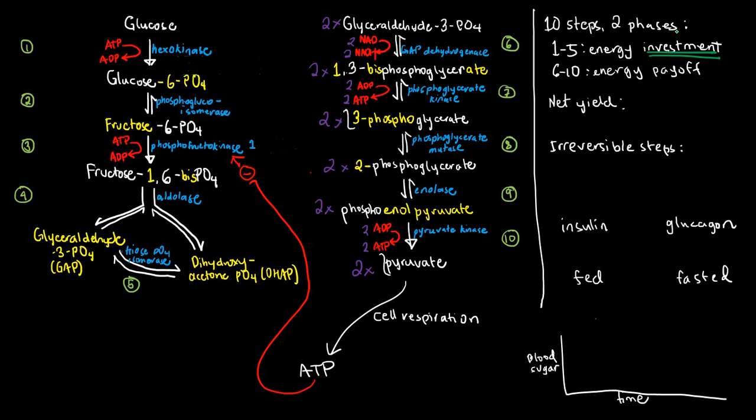Technically, you cannot spend that. You cannot use that because you used it for investment. So, for example, in step one, that's one ATP invested. So, that's a net loss of one. And then in step three, that's another minus one. So, since what's only happening in the first five steps is a net loss of energy, that is what you can consider as the investment part of this phase.